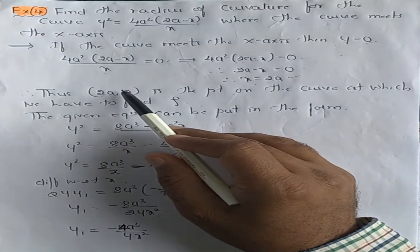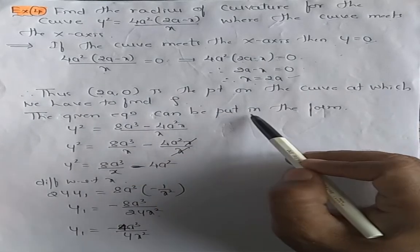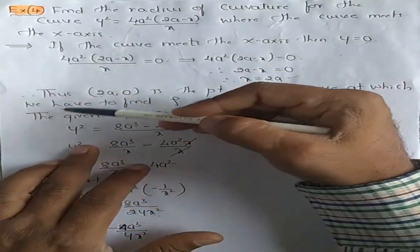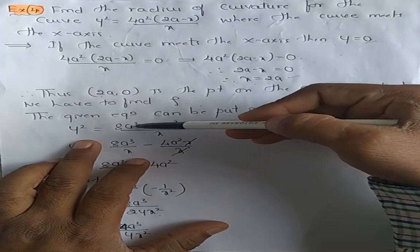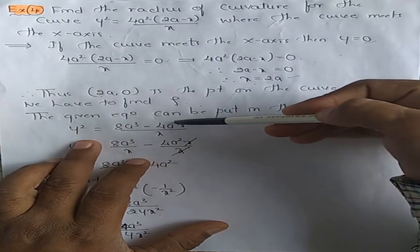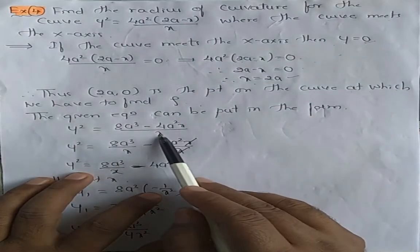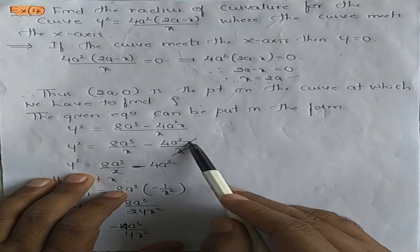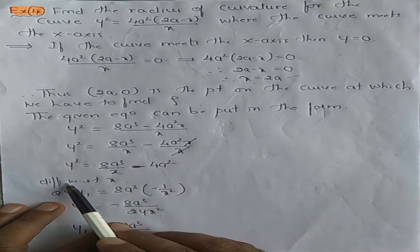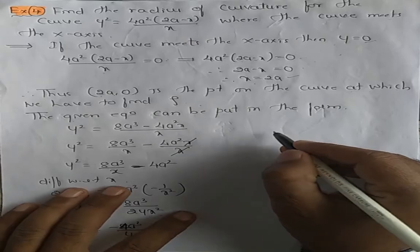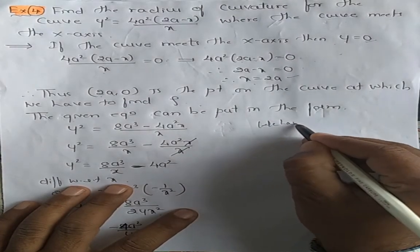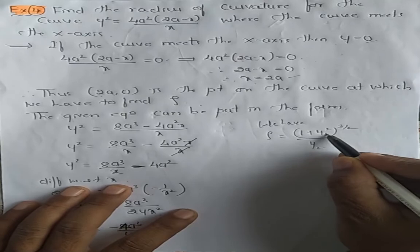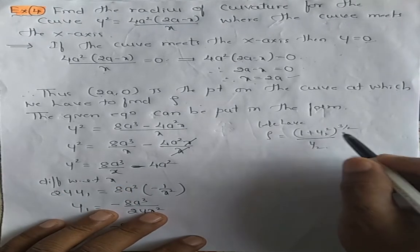So (2a, 0) is the point at which we have to find the radius of curvature. The given equation can be rewritten: multiply out to get y² = 8a³/x − 4a². The radius of curvature formula is ρ = (1 + y₁²)^(3/2) / y₂, so we need to find y₁ and y₂ by differentiating.